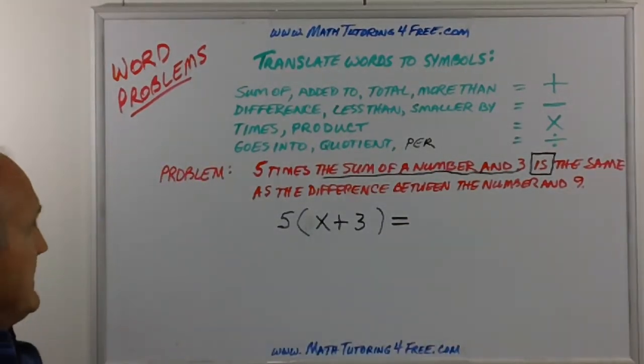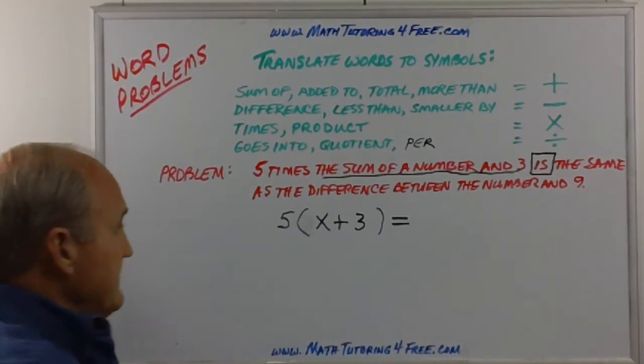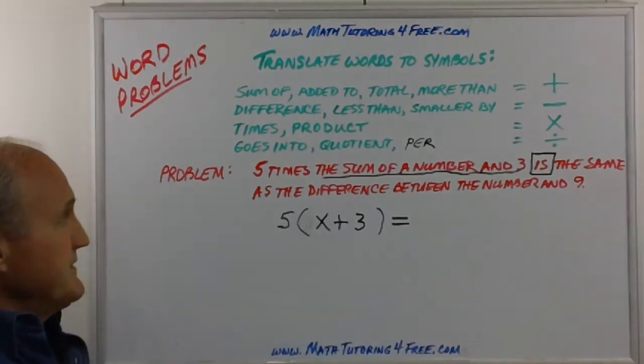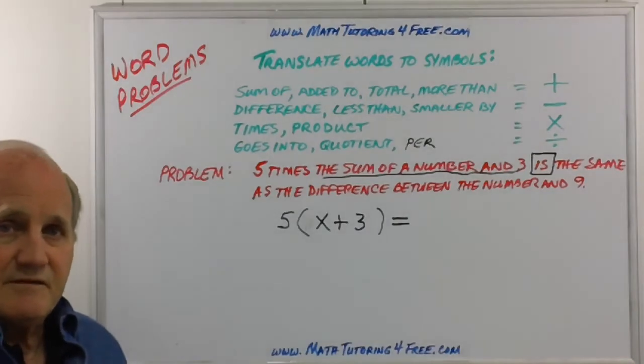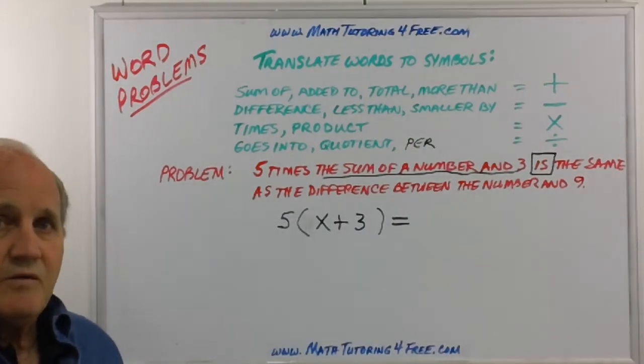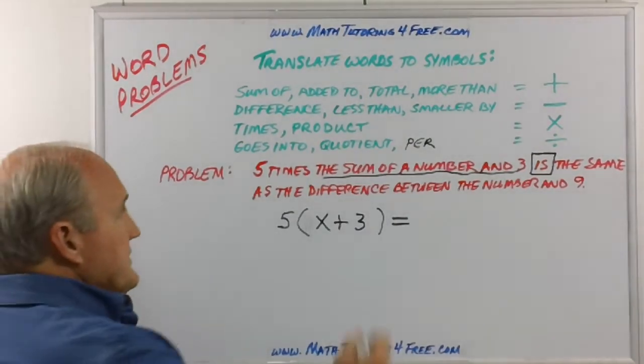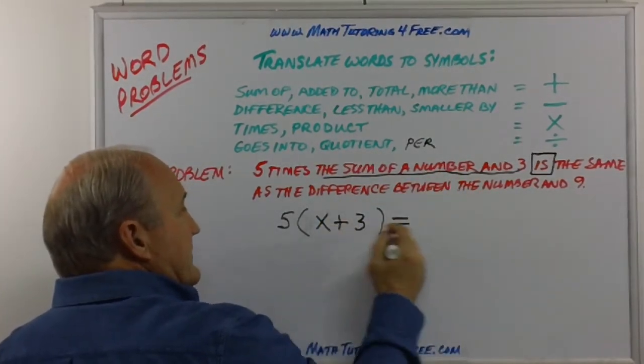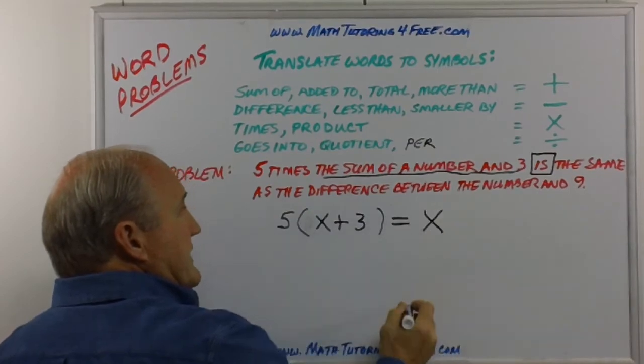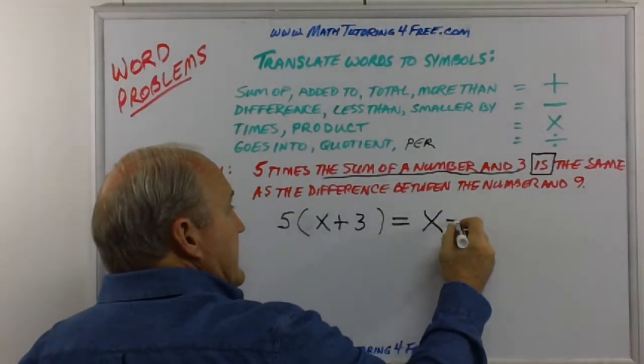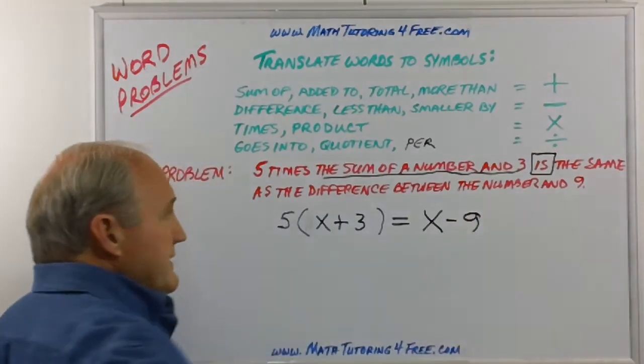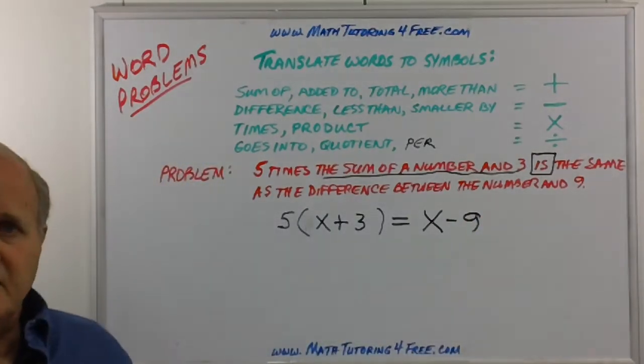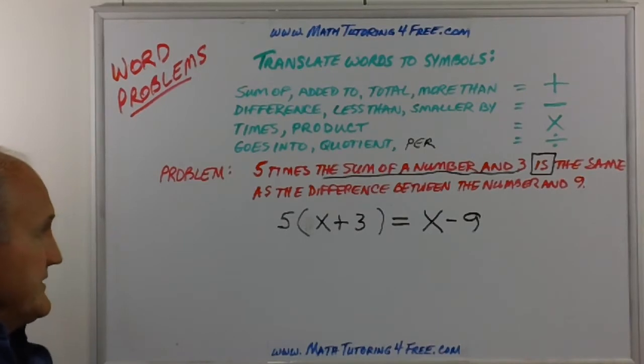The same number or the same as the difference. Oh, is the same as, so that's again equals. As the difference between the number and nine. Difference means what? Difference means we're going to subtract. What are we going to subtract? We're talking about the difference between the number, it's the same number, so it would be this X, and the difference between that X and the number nine.